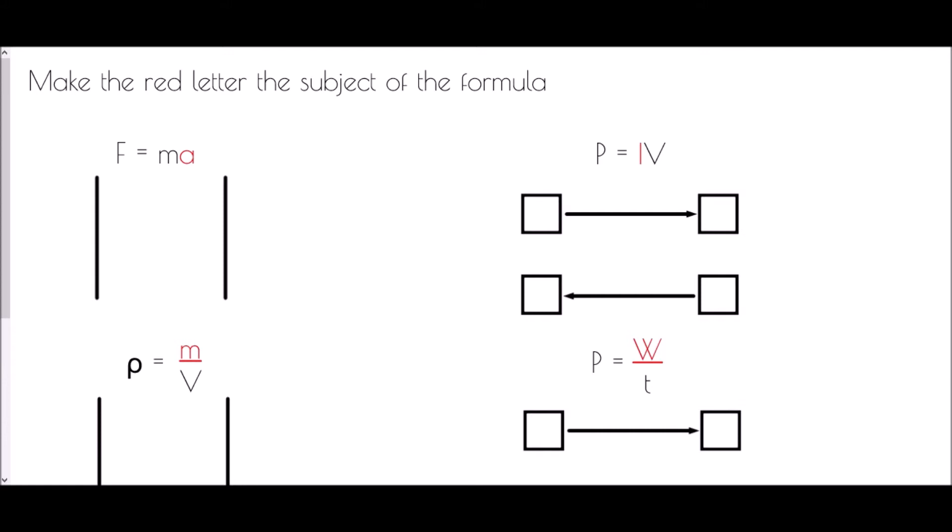We have F = ma. We've actually got two different versions of these questions, because it links directly to the two different methods I've previously shown for solving equations: either the balancing method or the flowchart method. I'm going to show you both versions depending on which one you prefer. We're going to begin with the balancing method — F = ma — and we want to make a the subject of the formula.